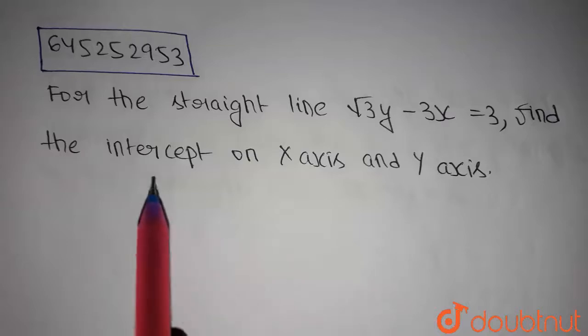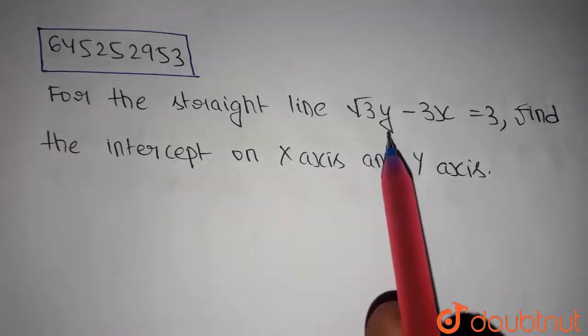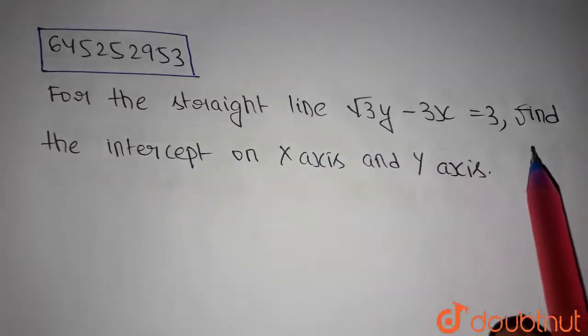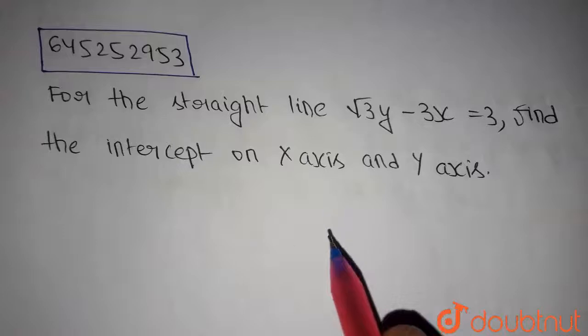This is our today's question. For the straight line, root 3y minus 3x is equal to 3, find the intercepts on the x and y axis.